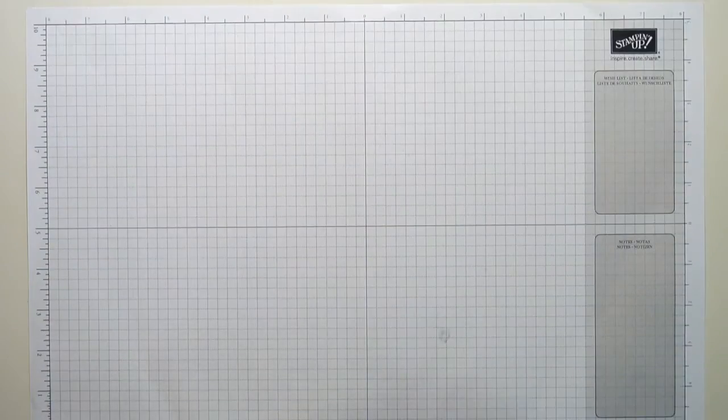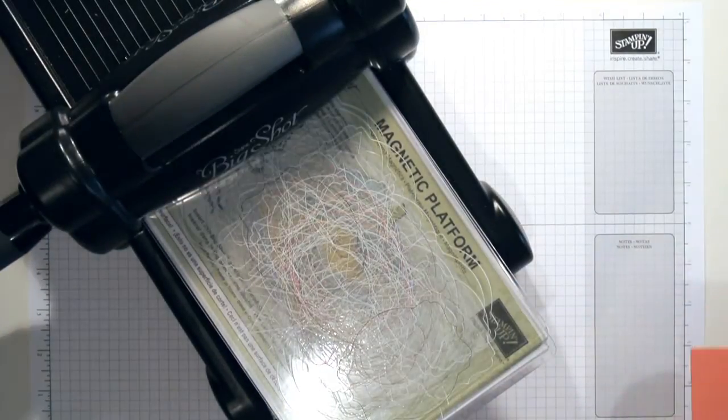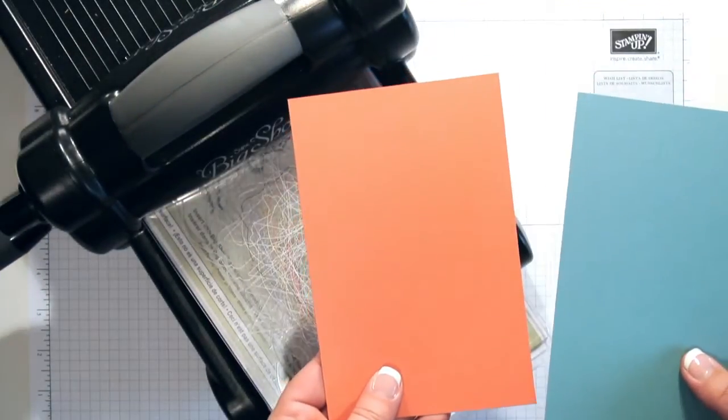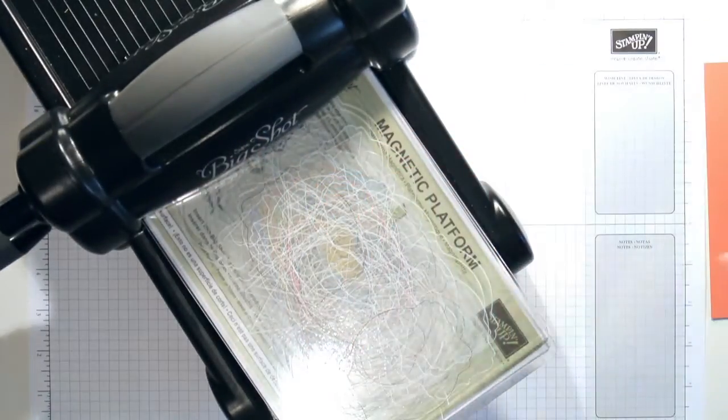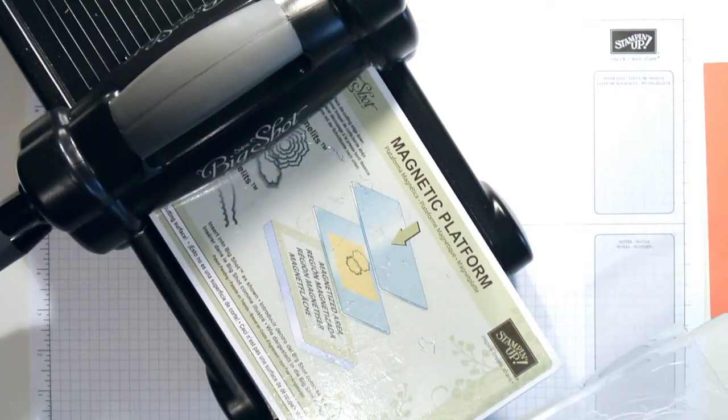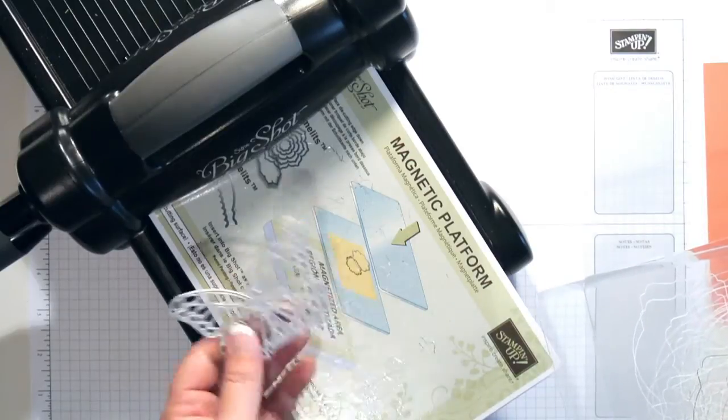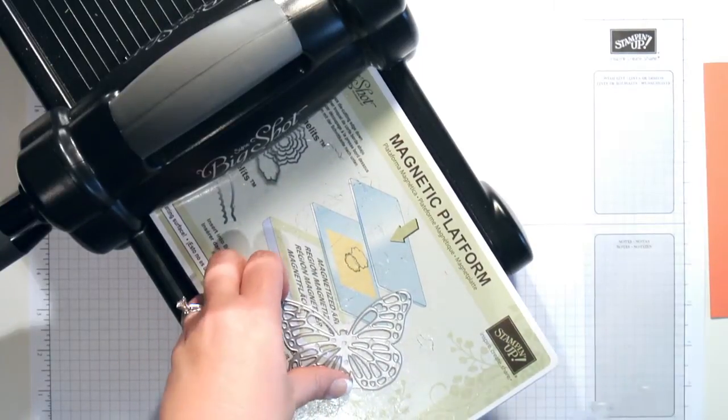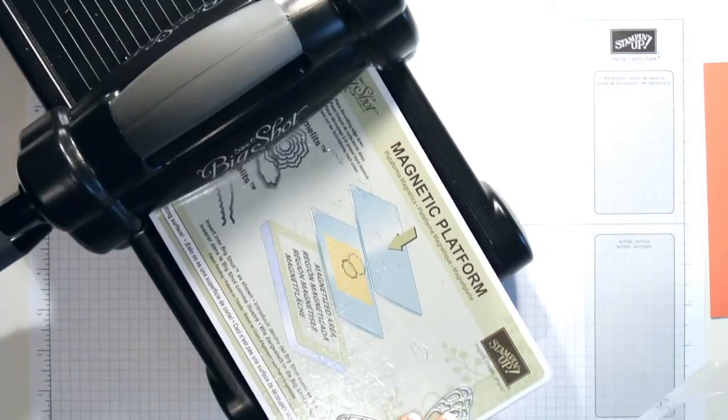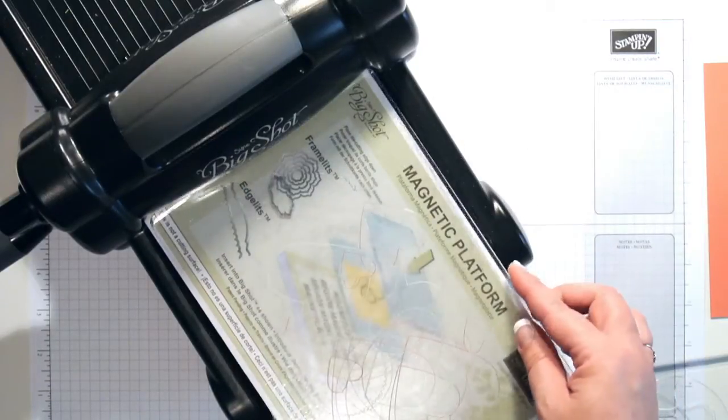So what I did was brought in my Big Shot. I wanted to use Calypso Coral and Lost Lagoon. What I used with my die was my magnetic platform, and I love this thing. This is perfect for framelits because it's going to adhere like a magnet.